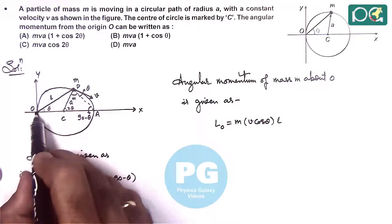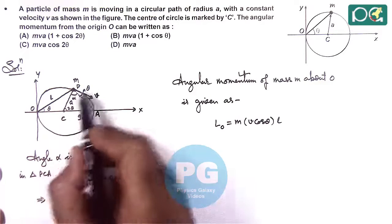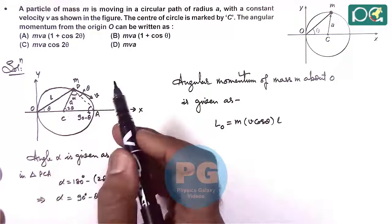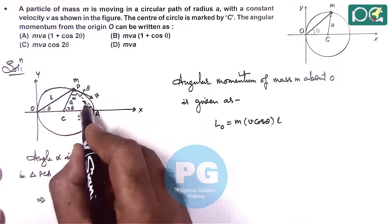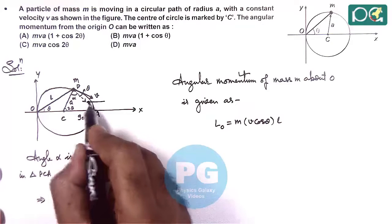Because about O, the perpendicular velocity component to L is V cos theta. V sin theta here along O will not have any angular momentum. So here we will consider this component of velocity which is V cos theta.